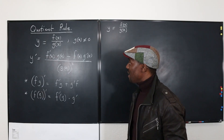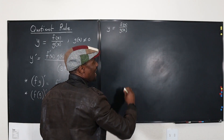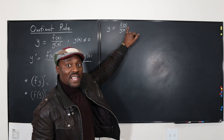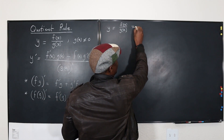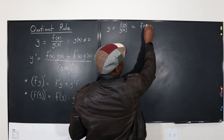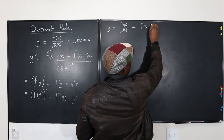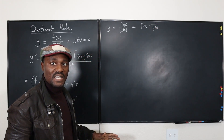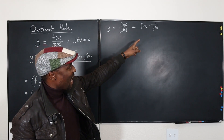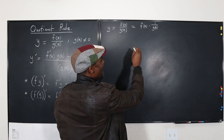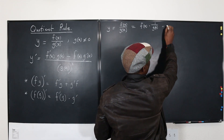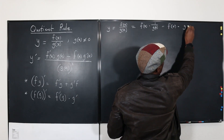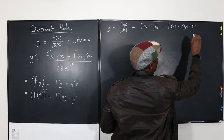The first thing we're going to do is try to rewrite this as a product so we can use the product rule. You can always write a ratio as a product. I'm going to write this as f of x multiplied by one over g of x. That makes life a lot easier. And we can actually write this again as f of x multiplied by g of x raised to the power negative one.